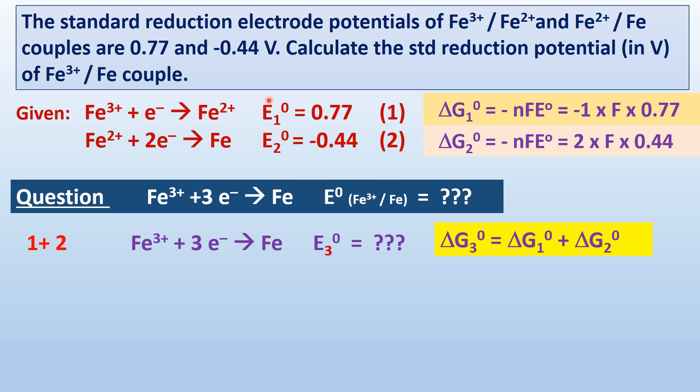The EMF cannot be added to give E₃⁰, but the thermodynamic parameters can be added or subtracted. Therefore, ΔG₃⁰ equals ΔG₁⁰ plus ΔG₂⁰.